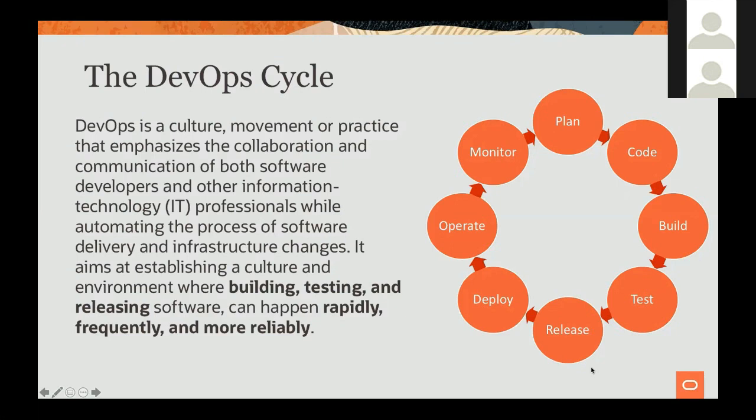If you look at the definition of DevOps on Wikipedia, you'll see they're talking about a culture, a movement, and best practices. In this session we're going to focus on the later part of the definition — beyond being a culture, it's also having an environment that allows you to build, test, and release software rapidly, frequently, and reliably.